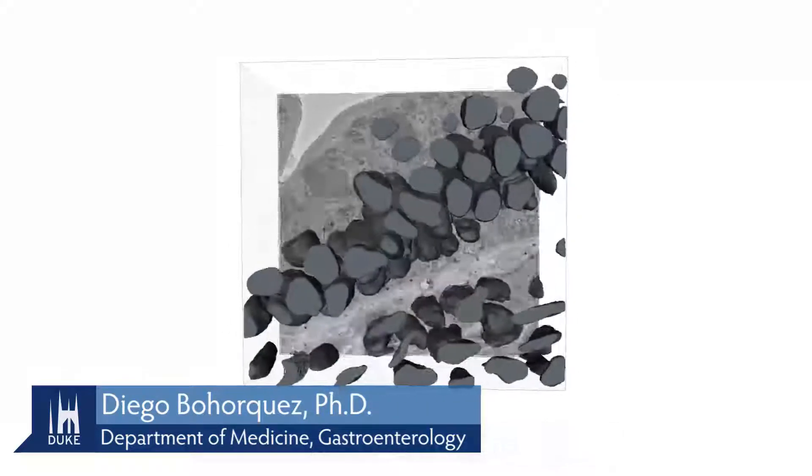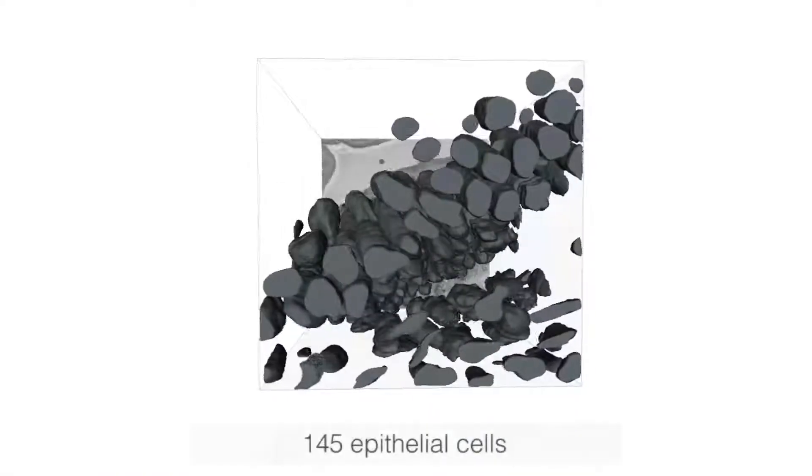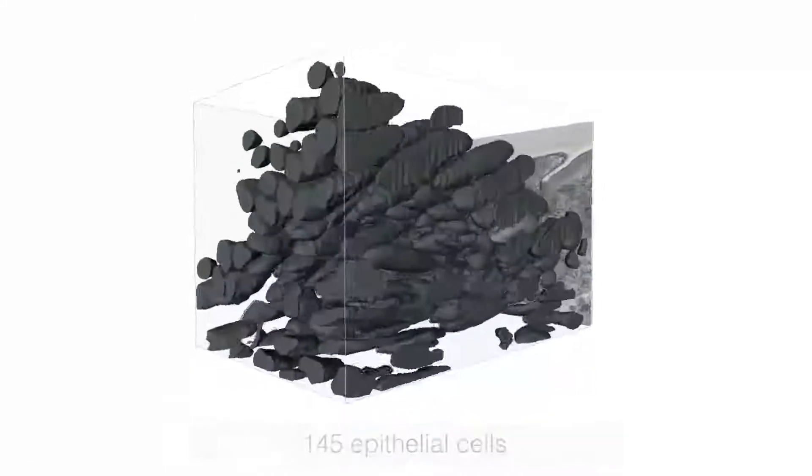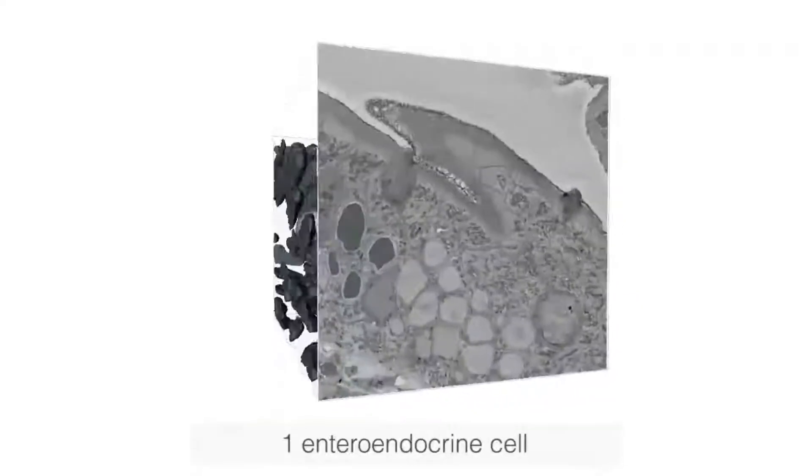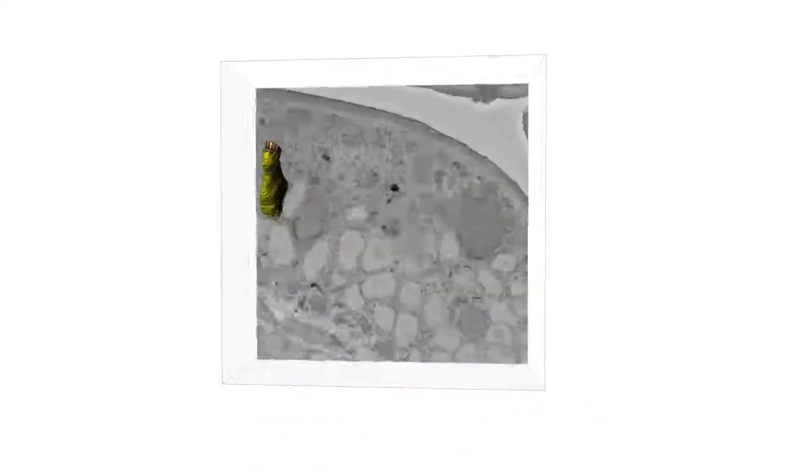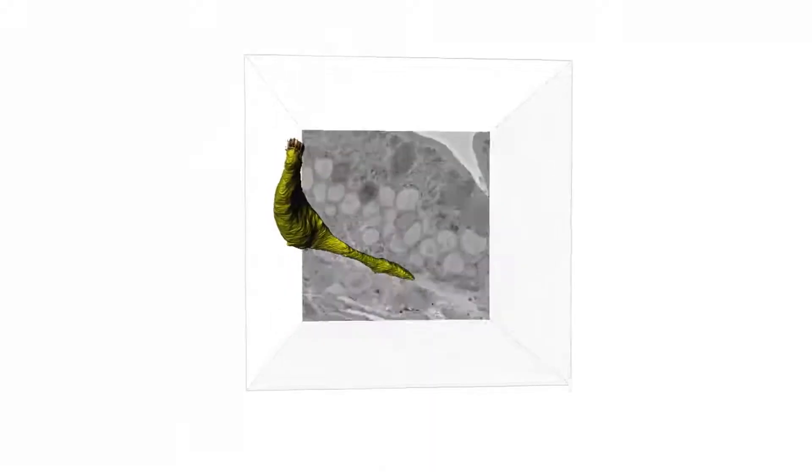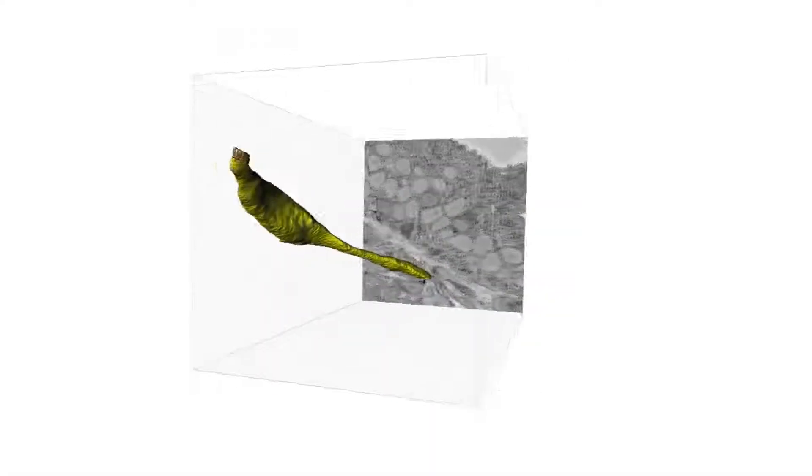Here we have a cube of gut tissue that has been reconstructed. It is a series of 700 micrographs. In gray, we're seeing the nuclei of those cells in the epithelium and below in the lamina propria.